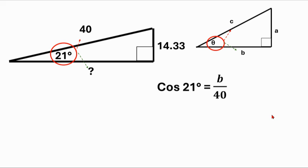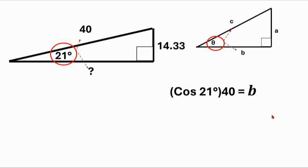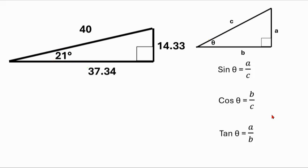We're going to solve this the same way. Multiply by 40 so we can get B on a side by itself. The 40s cancel out, then you got cosine of 21 multiplied by 40. That's something you put in the calculator, and when you do, you should get 37.34.